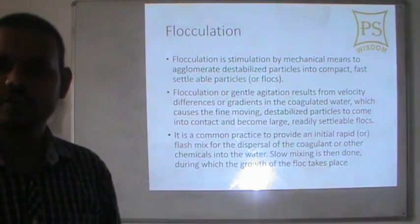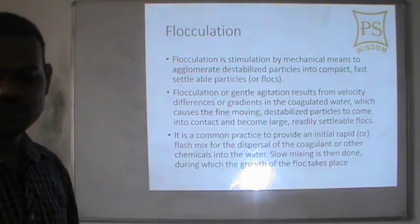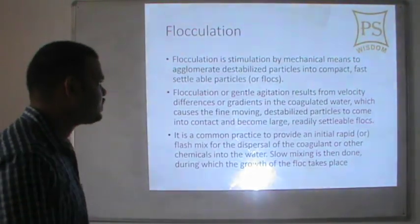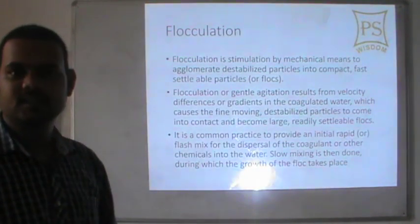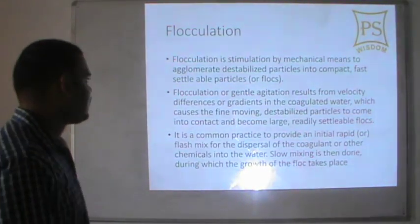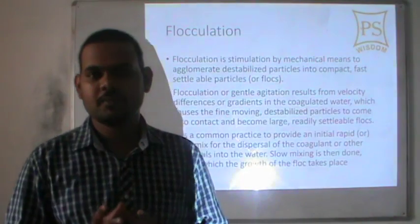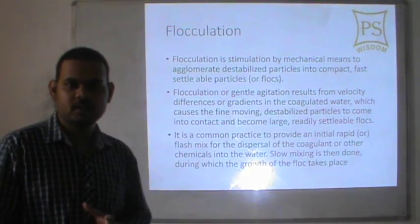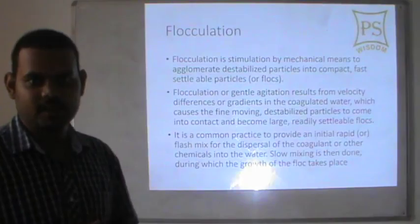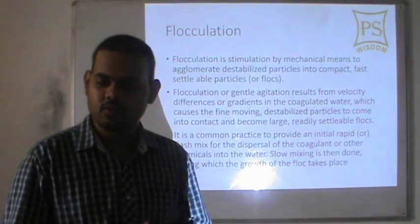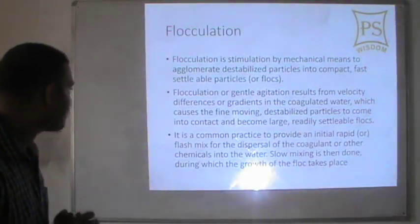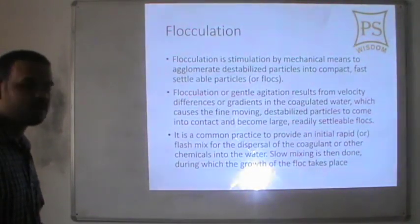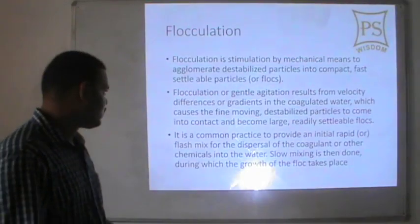Flocculation is a stimulation by mechanical means to agglomerate destabilized particles into compact, settlable particles known as flocks. The flocks are gelatinous precipitates which are destabilized by flocculants, which are chemical agents. They get settled at the bottom of the sedimentation tank, which makes sedimentation more efficient.